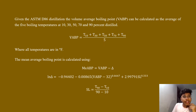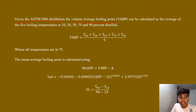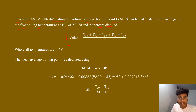If we are given the ASTM D86 distillation data, in order to calculate the mean average boiling point we first need to calculate the volume average boiling point. The volume average boiling point can be calculated by taking the average of the five boiling point temperatures at 10, 30, 50, 70, and 90 volume percent distilled. Using this equation we will be able to calculate the volume average boiling point. The temperature values used in this equation are in degrees Fahrenheit.